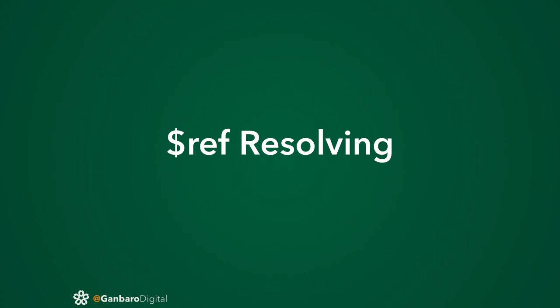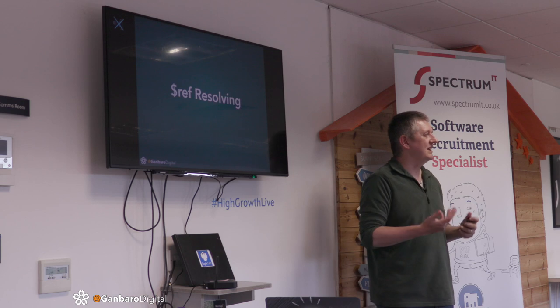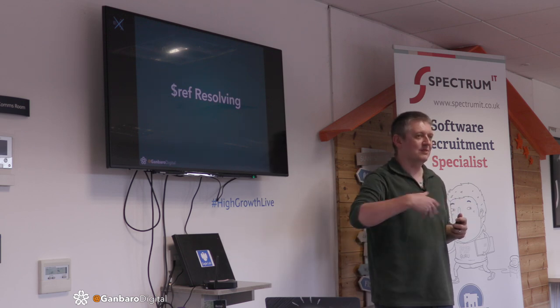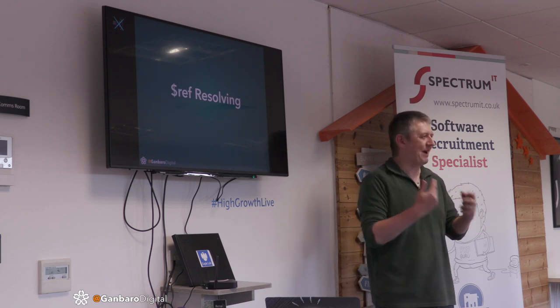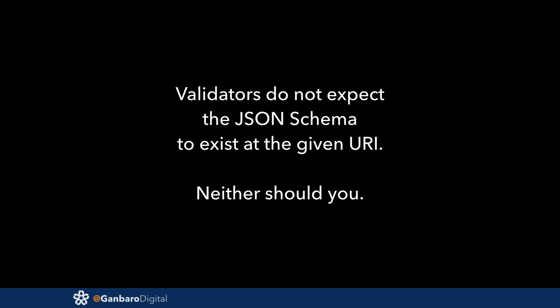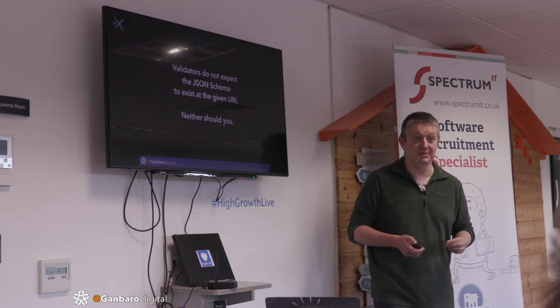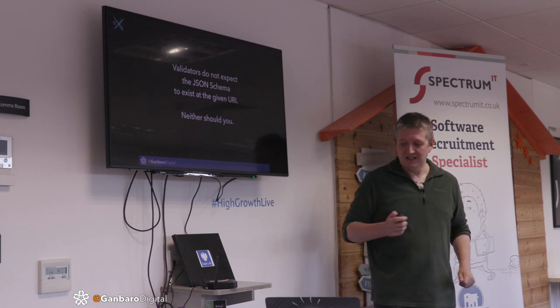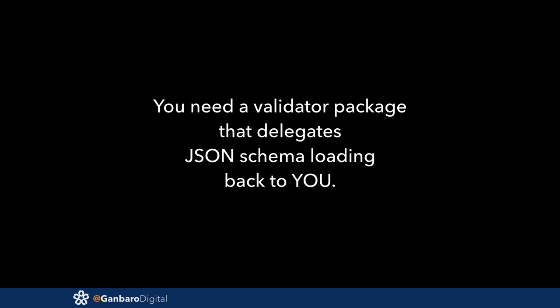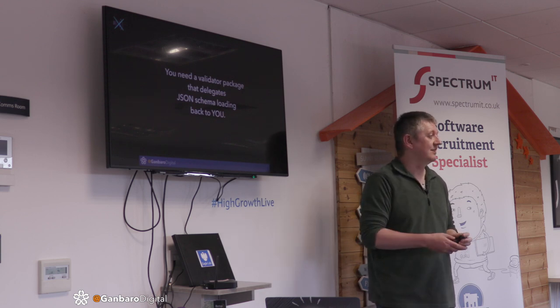Dollar-ref resolving — your point from earlier. This is another thing that in documentation and tutorials is barely mentioned. The mechanism of how $ref and an ID works is explained, but very quickly, in a paragraph or two, and then everyone moves on. The validators know these are IDs, not locators — they shouldn't ever try to load a file from that location. Some do, but those that do are broken; they're not compliant with the spec. The spec says they shouldn't even try.